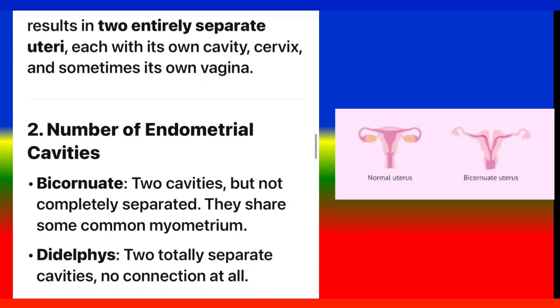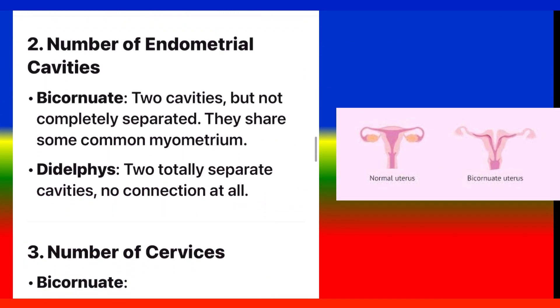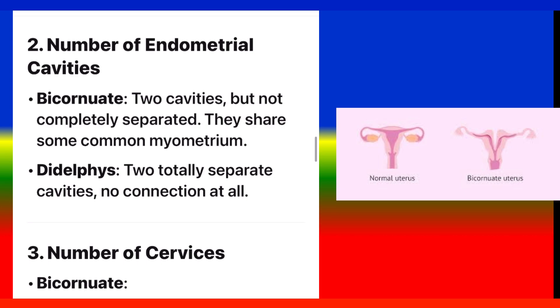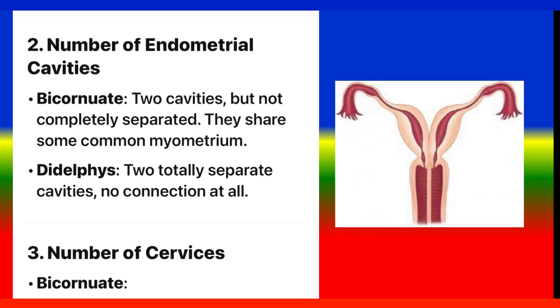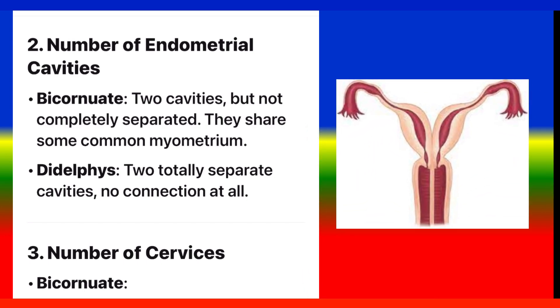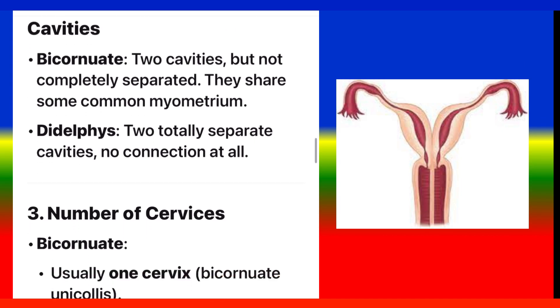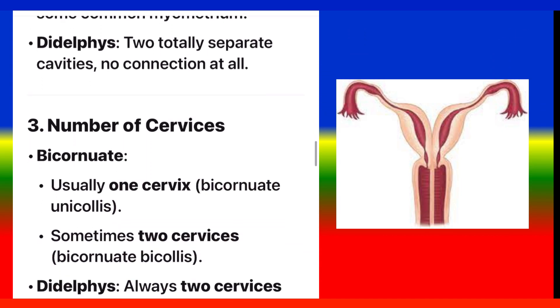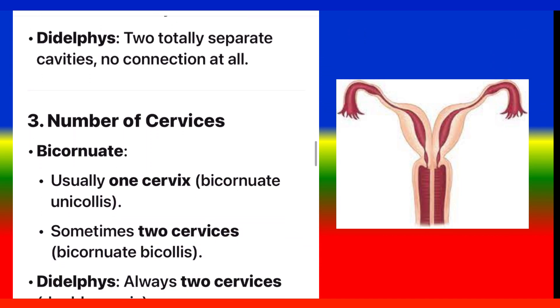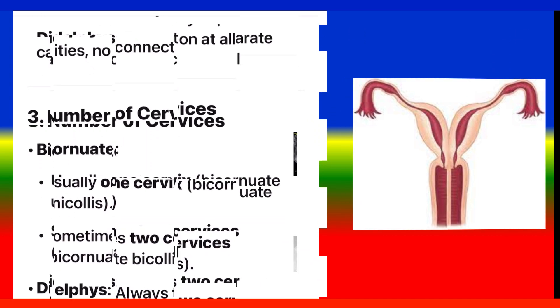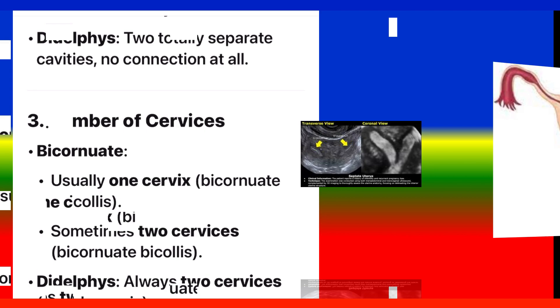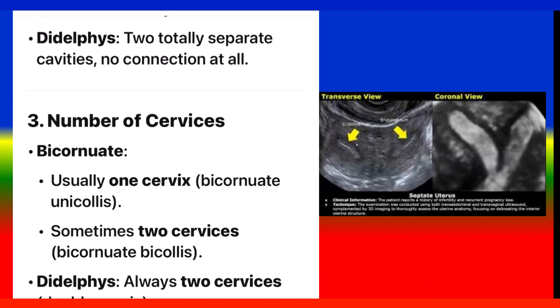Point 2: Number of endometrial cavities. Bicornuate: two cavities but not completely separated — they share some common myometrium. Didelphys: two totally separate cavities with no connection at all.